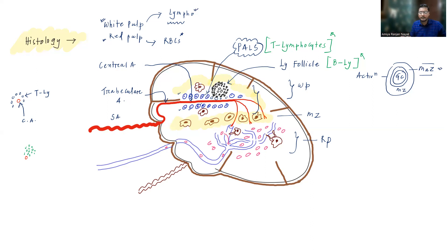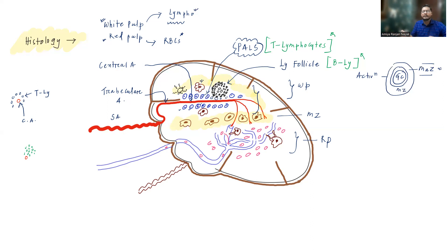This is about the white pulp, but you have to remember that along with lymphocytes, there will also be macrophages and dendritic cells. Dendritic cells must be present near the T lymphocytes because they will present antigens to them. So in the white pulp, you will find T lymphocytes in the peri-arteriolar lymphoid sheath, B lymphocytes in the lymphoid follicles, along with macrophages and dendritic cells.